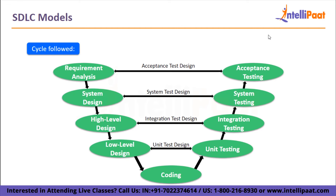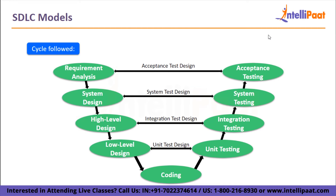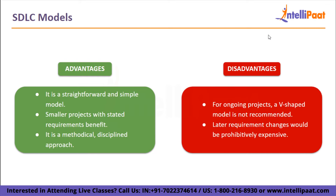Then we have system testing, carried out during the system design phase — involving testing the entire system including every aspect of its functionality. Lastly, acceptance testing is carried out in the customer's environment and is connected to the requirement analysis process. For advantages, the V-model is straightforward and simple; smaller projects with stated requirements that freeze early benefit from this approach, and it yields a high-quality end product. For disadvantages, a V-shaped model is not recommended for ongoing projects, and later requirement changes would be prohibitively expensive.